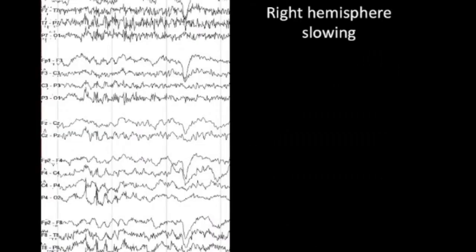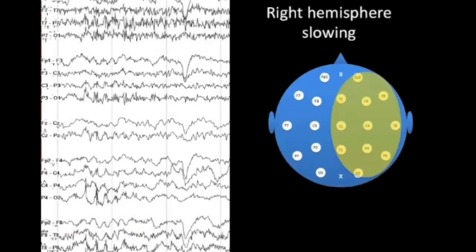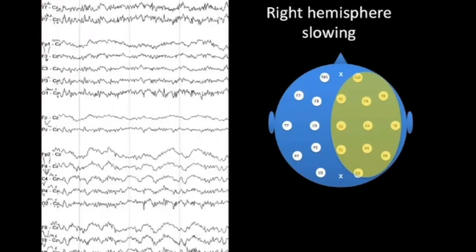We can also look at how different montages handle a broad area of slowing in one hemisphere. In this example, a patient who just had a seizure arising in the right temporal region shows polymorphic theta and delta activity in the right temporal region with a very broad field. When using the Laplacian montage — comparing only to closest adjacent neighbors — it is very difficult to see the slowing. But applying a distant reference montage such as the CZ montage produces a dramatic change, and the focal slowing is much better seen.